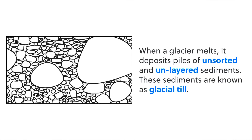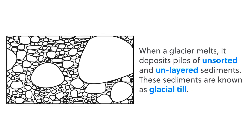When a glacier melts, it's going to deposit or drop off all of the sediment — all of the pieces of rock and sand and silt and clay that it was carrying with it. When it does so, it just kind of drops it off, and so we end up with these big piles of unsorted and unlayered sediment. We have a term for these sediments, and that's called glacial till.